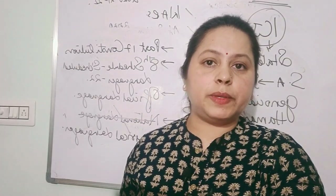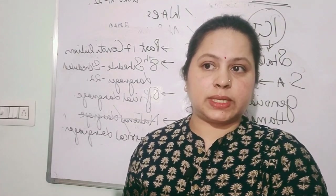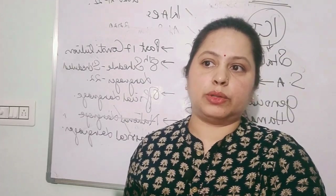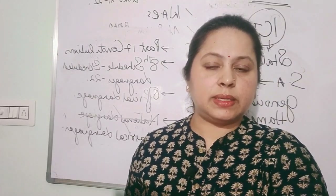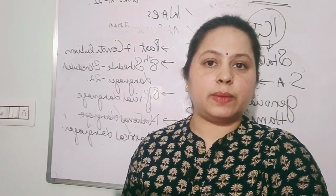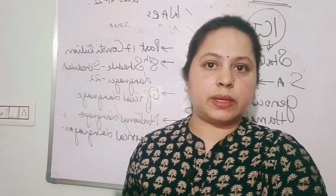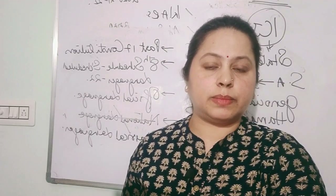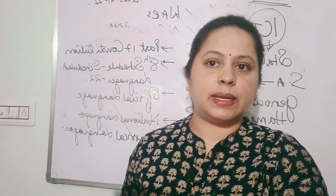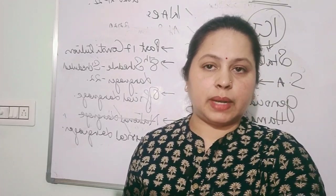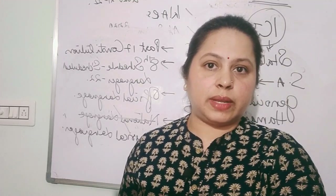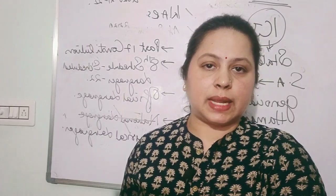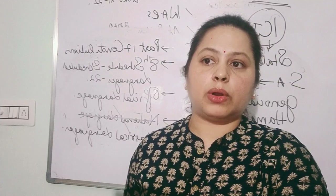Chandrayaan-3's Pragyan rover confirmed the presence of sulfur on the moon. Another instrument called the Langmuir Probe on the Vikram lander revealed that the density of plasma near the lunar surface is very thin. The Langmuir Probe is named after American physicist Irving Langmuir and measures the properties of plasma. The plasma in question is not blood plasma but a soup of positively charged ions and negatively charged electrons. ISRO rechristened the Langmuir probe on the Vikram lander as RAMBHA-LP — Radio Anatomy of Moon Bound Hypersensitive Ionosphere and Atmosphere.